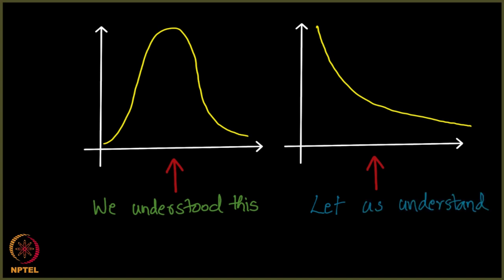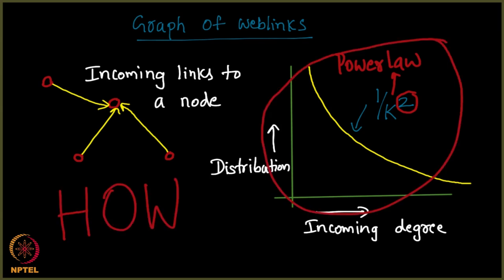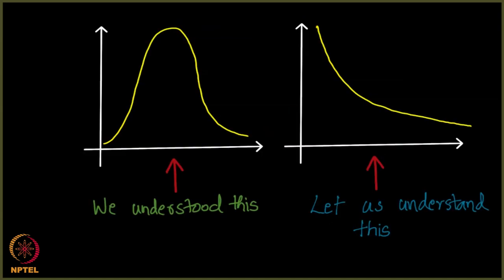So, our main focus that is coming next is we look at this power law networks, which is the web graph and we will ask this question, how did this happen? Why did this come here? What exactly made this curve appear like this? While we were actually expecting, what were we expecting? We were expecting something like this. Something like this we were expecting. We ended up getting something like this. We will see more of it in the next lecture.